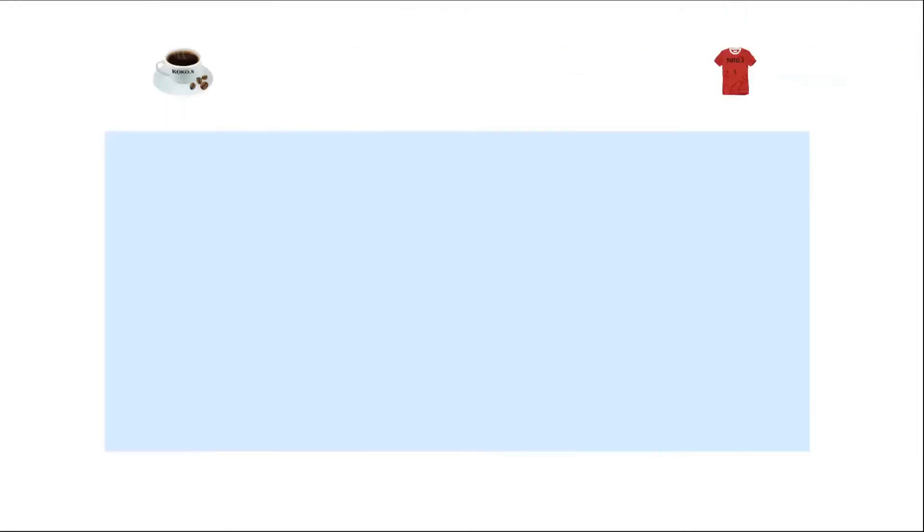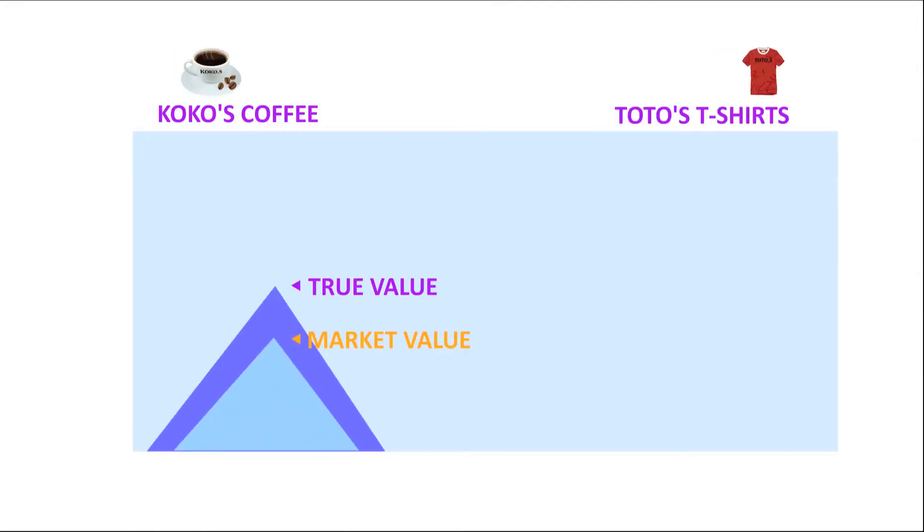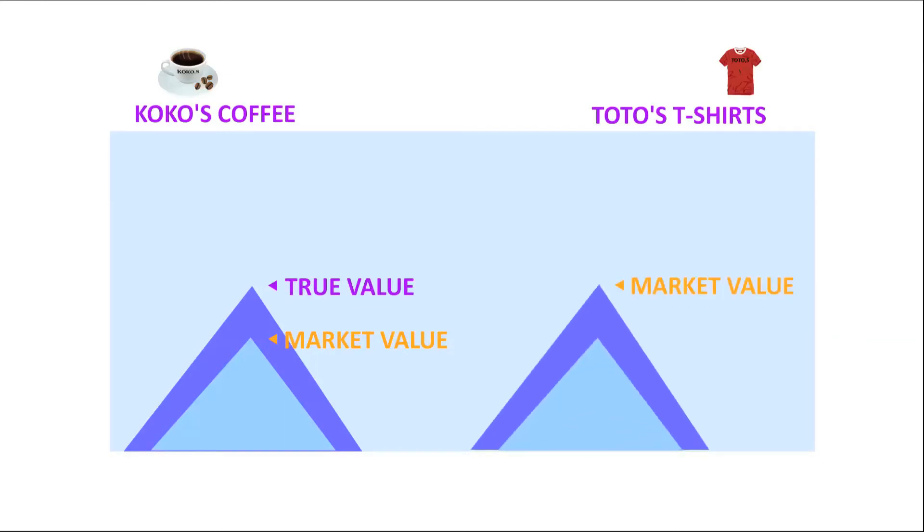According to his estimate, the true value of Coco's Coffee is higher than its current market value, while the true value of Toto's T-shirts is lower than its current market value.